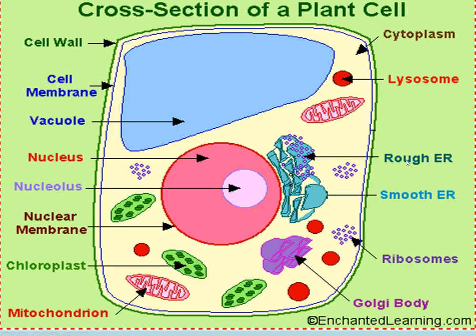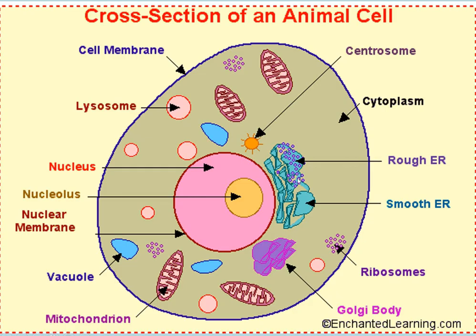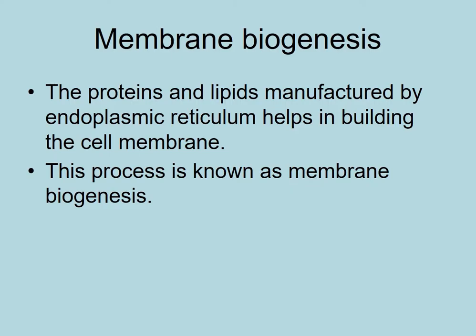Here you can see rough endoplasmic reticulum and smooth endoplasmic reticulum in plant cells. Here you can see rough endoplasmic reticulum and smooth endoplasmic reticulum in animal cells. You must know the term membrane biogenesis. The proteins and lipids manufactured by the endoplasmic reticulum help in building the cell membrane. This process is known as membrane biogenesis.